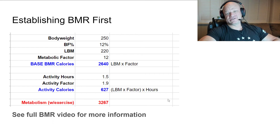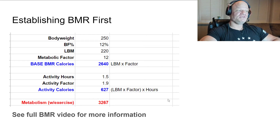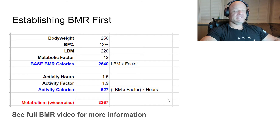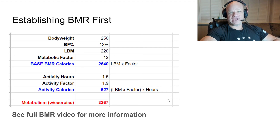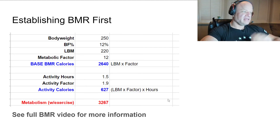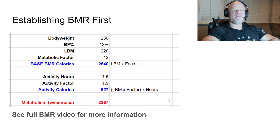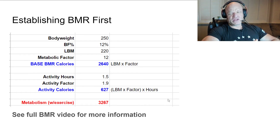If I ate 2,640 calories a day I'd be losing a lot of weight, so obviously there are more calories burned somewhere else — which is in activity. I use a formula for that: lean body mass multiplied by an activity intensity factor, times the hours of activity per day. This gives me a total metabolic rate of 3,267, which is pretty close to my break-even point. I can tell you if I get below 3,200, I start losing weight.